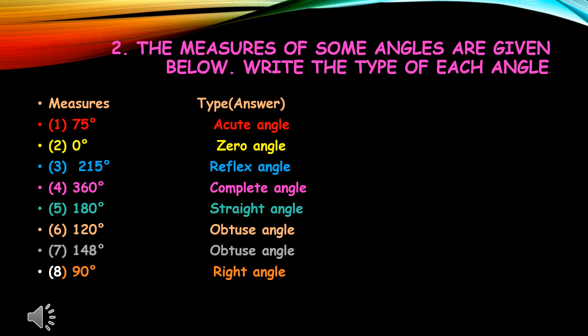Next, 120 degrees: any angle between 90 degrees and 180 degrees is called an obtuse angle, so 120 degrees will be named as obtuse angle. Similarly, 148 degrees will also be named as obtuse angle.